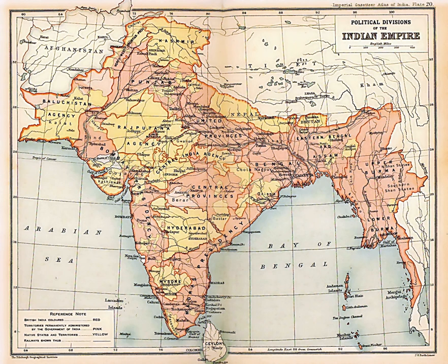The termination of paramountcy meant that all rights flowing from the states' relationship with the British Crown would return to them, leaving them free to negotiate relationships with the new states of India and Pakistan on a basis of complete freedom. Early British plans for the transfer of power, such as the offer produced by the Cripps Mission, recognised the possibility that some princely states might choose to stand out of independent India. This was unacceptable to the Indian National Congress, which regarded the independence of princely states as a denial of the course of Indian history, and consequently regarded this scheme as a Balkanisation of India. Congress had traditionally been less active in the princely states because of limited resources, and because Congress leaders, in particular Mohandas Gandhi, were sympathetic to the more progressive princes.